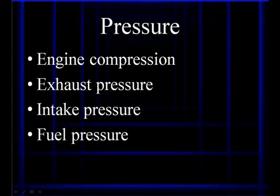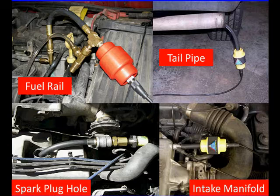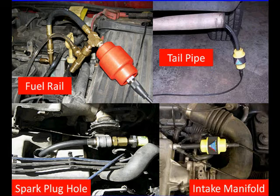Fuel rail pressure is going to be measured every time an injector opens — there's going to be a pressure change or a pressure drop. The pressure transducers are going to change that movement into an electrical signal that we can see on a lab scope. We can put pressure transducers in the top left on the fuel rail, top right in the tailpipe, and bottom left — we can remove a spark plug and place a pressure transducer right in the spark plug hole.